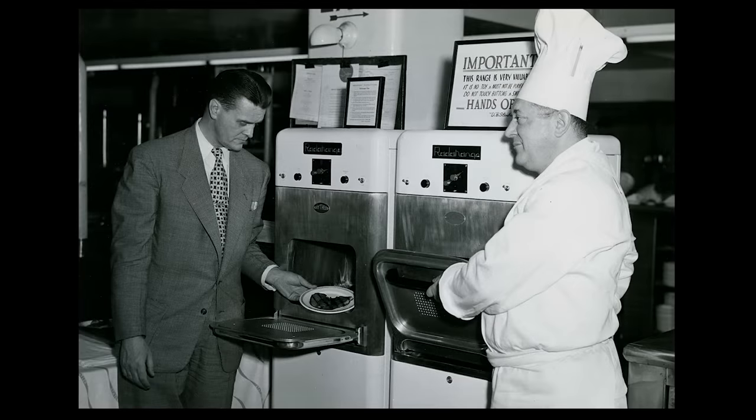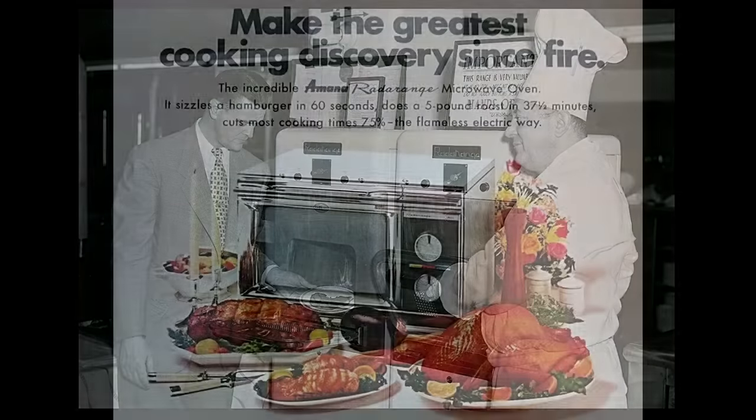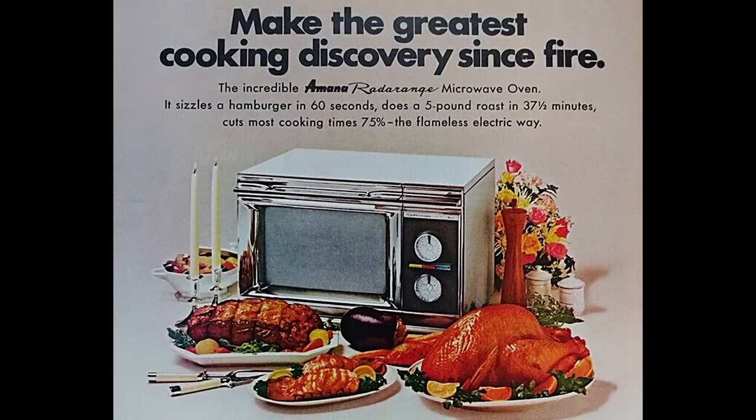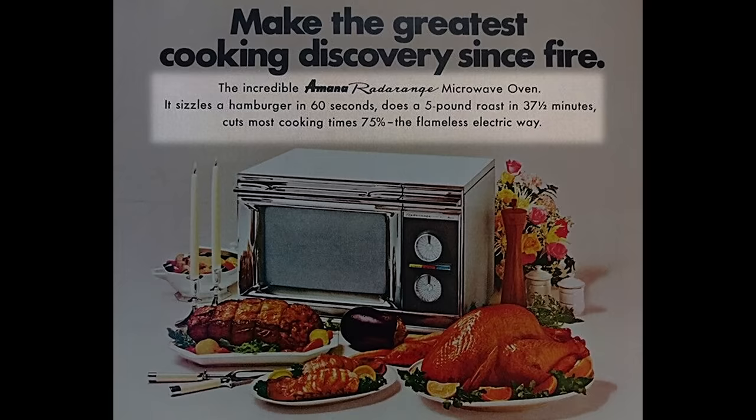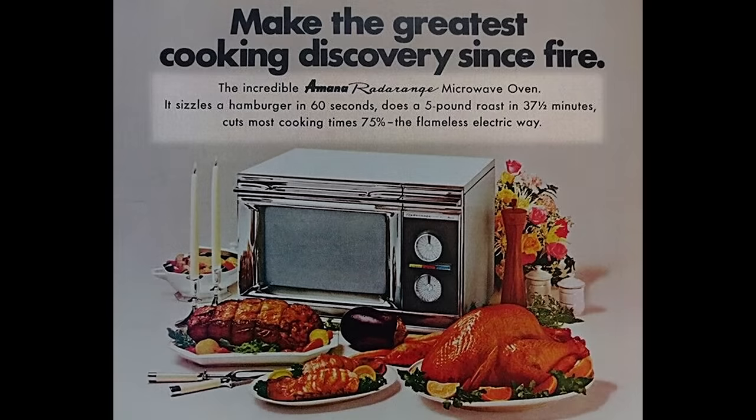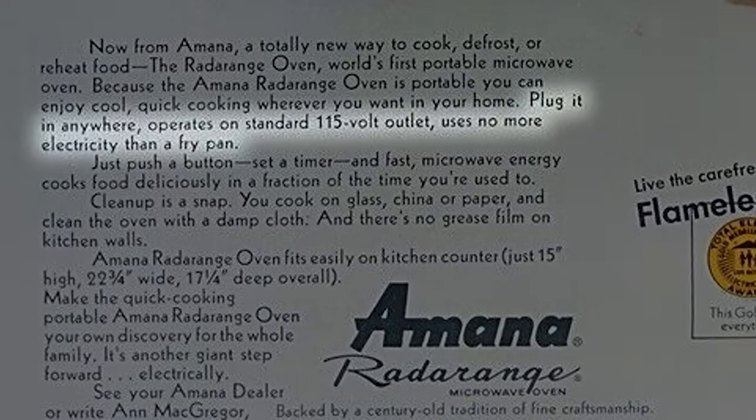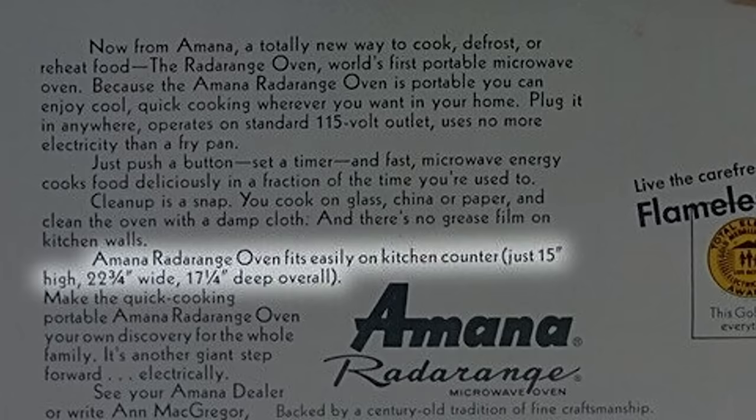To become a household item, a consumer oven needed a new notion of best. We can see this in the ads of the first successful consumer oven. They still promoted fast cooking, but look now at this specification that mentions a standard 115-volt outlet. And further down in the ad copy, they extol how it fits onto a kitchen counter. Implicit here is also that the oven was inexpensive, at least compared to those large commercial ovens.